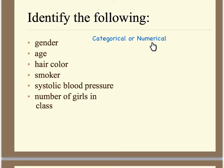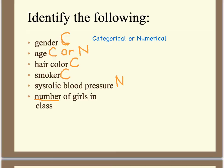Now let's determine whether these variables are categorical or numerical. Gender can only be described using words, so it has to be categorical. Age might be either one depending on context — if you're describing it as teen, adult, or senior, that's categorical, but if you're using a number, that's numerical. Hair color can only be described with a word, so that's categorical. For smokers, you might use heavy smoking or light smoking, which is categorical. Blood pressure is measured with numbers, so that's numerical. And the number of girls in a class is of course numerical.